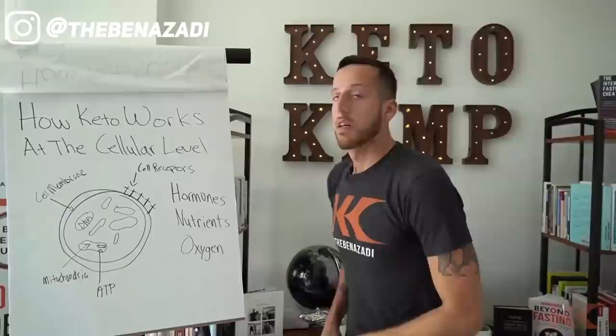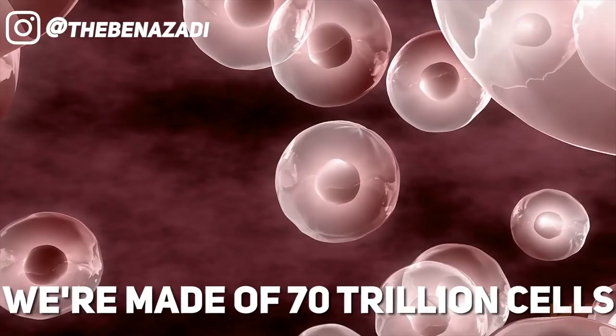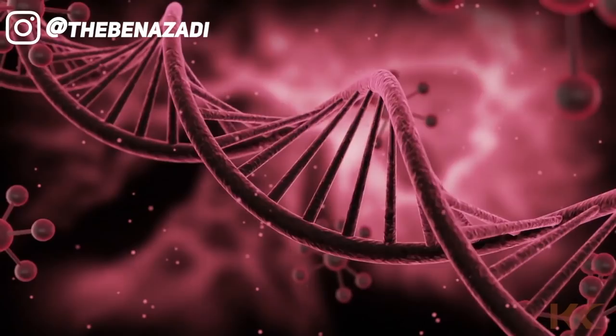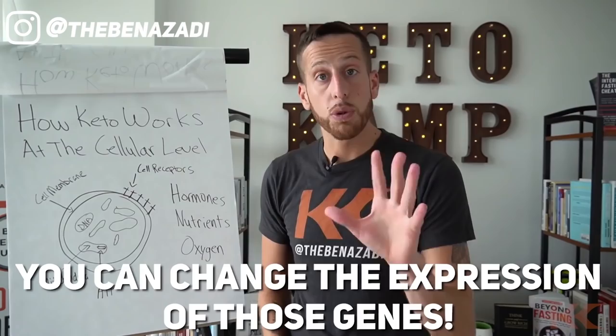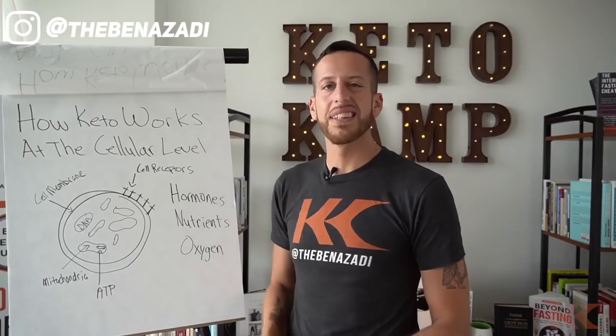Let me show you how this works at the cellular level. We're made up of 70 trillion cells in the human body. Every cell has within it your DNA nucleus. You cannot change the genes you were born with, however you can change the expression of those genes. Inside of your cells, you have the mitochondria — the energy power plant — producing ATP, which is adenosine triphosphate, the gasoline of your cell.